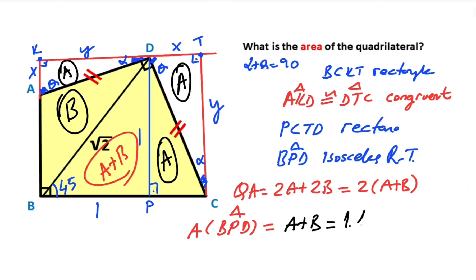So, the area equals 1 times 1 over 2. That means the area of the triangle BPD is equal 1 half. After that, if you plug in this value to the equation, quadrilateral area equals 2 times 1 half. That means quadrilateral area equals 1 unit square.